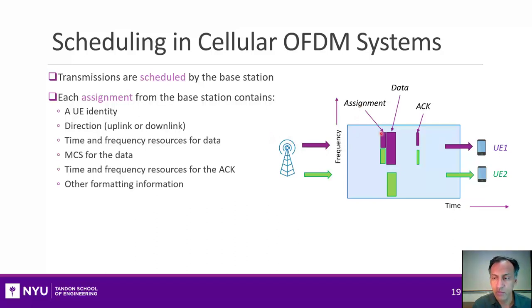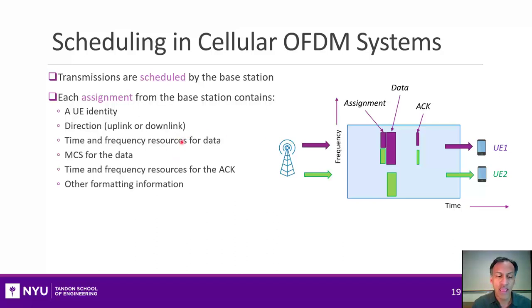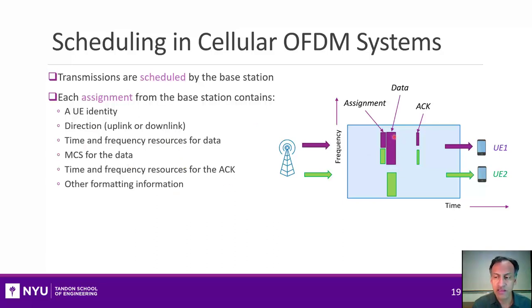There's an assignment phase, which tells the UE what data is being sent, who the data is intended for (the user identity), whether this is a schedule for the uplink or downlink, the time-frequency resources for the data, the MCS, and the time-frequency resources for where the UE is supposed to acknowledge that data. After sending that assignment, it can then send the data itself. The UE, because it has all the information, knows where to find it, can decode it, check a CRC, and then depending on whether it passed or failed, can send back an ACK.